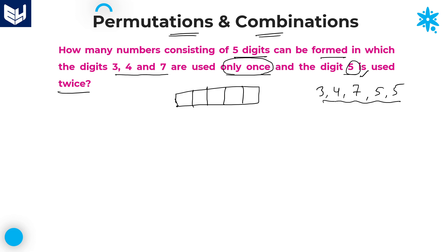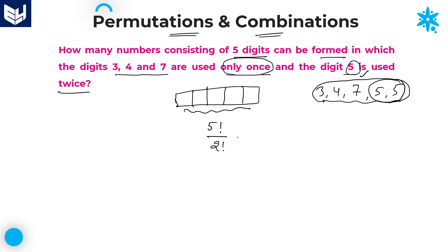If you observe carefully, I can arrange these 5 digits in 5 places in 5 factorial ways. But here, the digit 5 is repeated twice. That is the reason why I need to divide 5 factorial by 2 factorial — because the digit 5 is repeated twice.